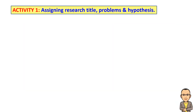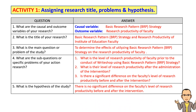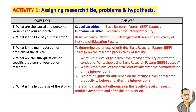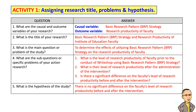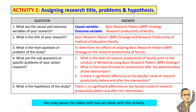As a hands-on application of the previous topics, you shall now accomplish Activity 1. Answer the following questions: 1. What are the causal and outcome variables of your research? 2. What is the title of your research? 3. What is the main question or statement of the problem? 4. What are the sub-questions or specific problems of your action research? 5. What is the hypothesis of the study? Write your answer in the right column. If your study is qualitative or descriptive without inferential questions such as test of difference or test of relationship, just identify the main variable and do not include an inferential sub-problem or answer the hypothesis item. Sample answers were provided in red font for easy reference. You may pause the video until you are done with this activity.